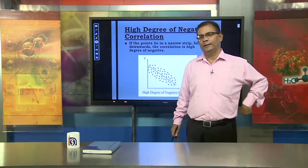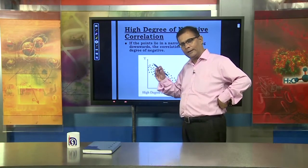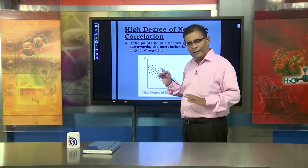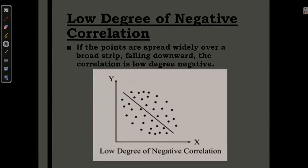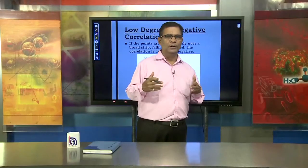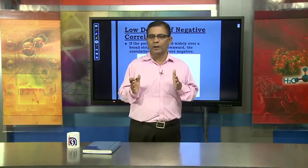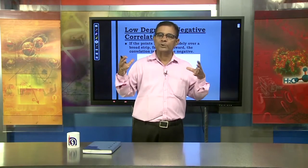High degree negative correlation: the explanation goes in the downward direction. Just as positive high degree correlation was explained, the same applies here but in the opposite direction. Similarly, low degree of correlation negative is opposite to the positive low degree of correlation. In this way, you can show and explain using graphical presentation whether the correlation between two variables is in the positive or negative direction.